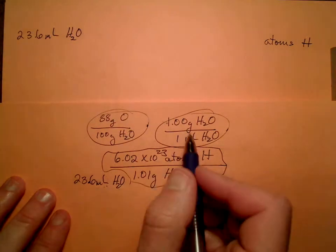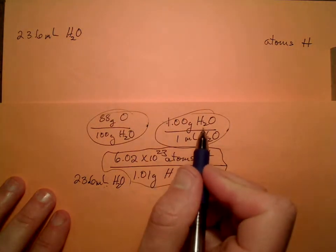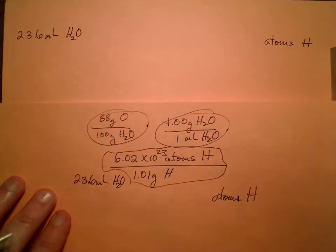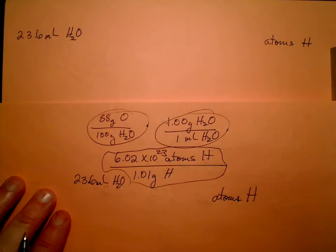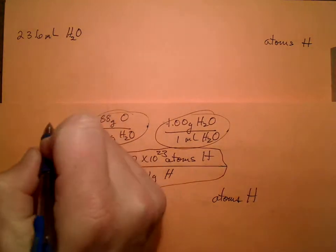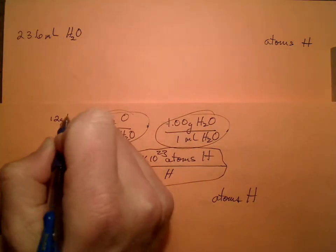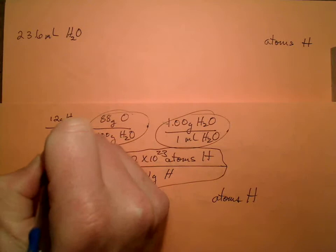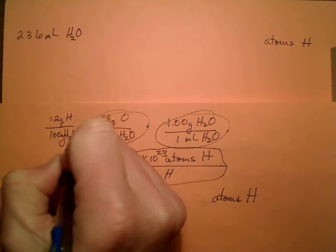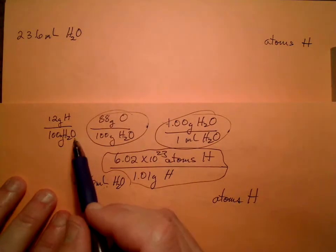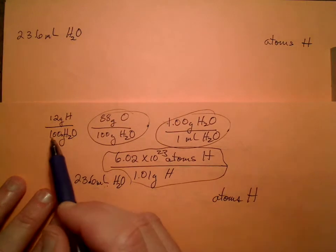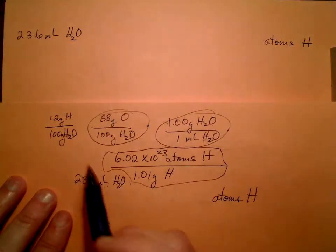But remember, if water is only H2O, it's hydrogen and oxygen. If it's 88 grams of oxygen per 100 grams of water, it must be also 12 grams of hydrogen per 100 grams of water. It has to be. It's got to add up to 100. So 88 and 12 is 100.